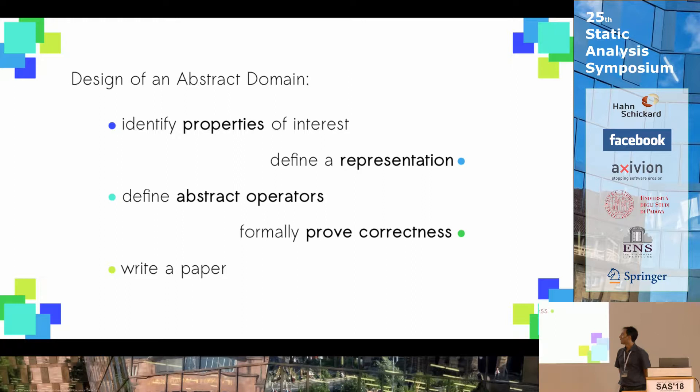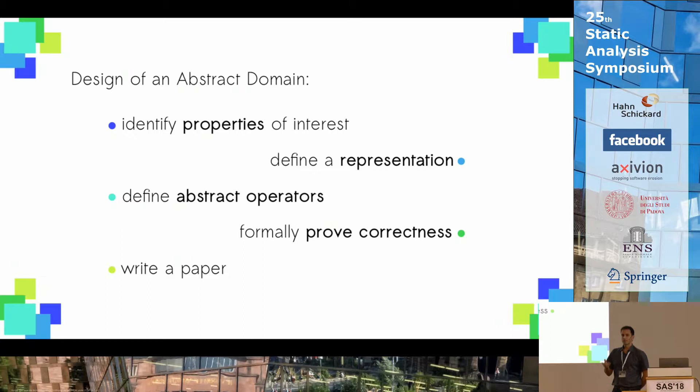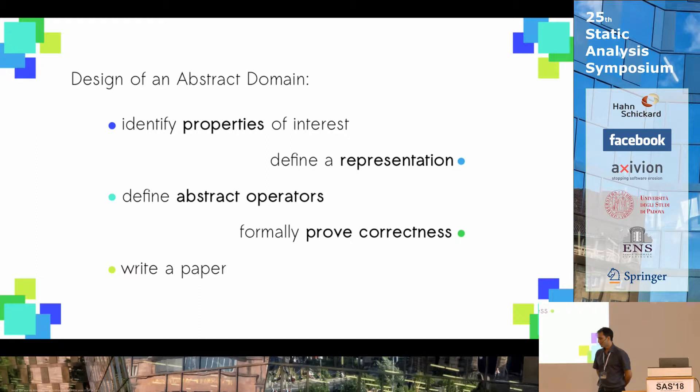When we design an abstract domain, we must focus on the property of interest — that is, what do we want to analyze — define an abstract representation for our domain, how do we encode these properties, then define abstract operators, which are the code and design that allow us to abstract the concrete execution. And this is not enough, because in the field of formal methods, we must prove that everything we have done is correct, which is not trivial, and it's so demanding that usually the outcome is writing a paper about what we have done.